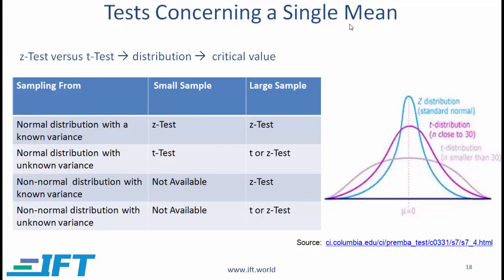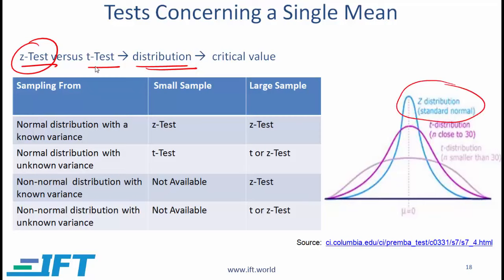For tests concerning a single mean, one of the decisions we need to make is whether to do a Z test or a T test. This decision drives the distribution that we use. For a Z test, we use the Z distribution or the standard normal distribution. If we use a T test, we use the T distribution and need to decide on the number of degrees of freedom, which depends on the sample size and impacts the critical values. So understanding which test to use is important.